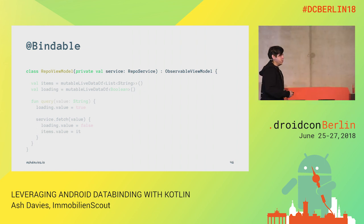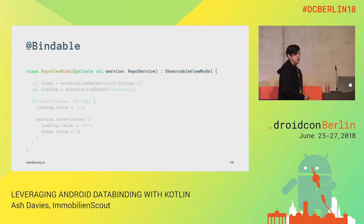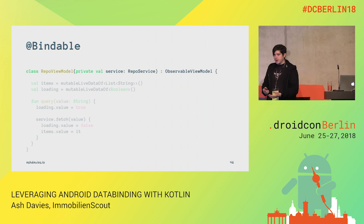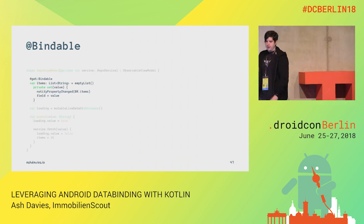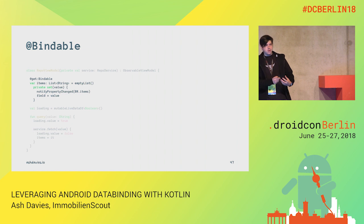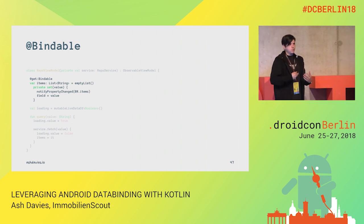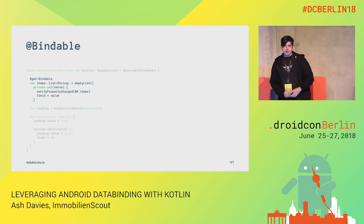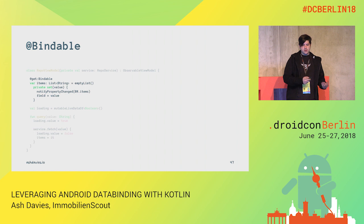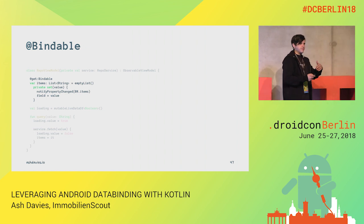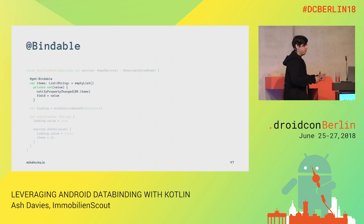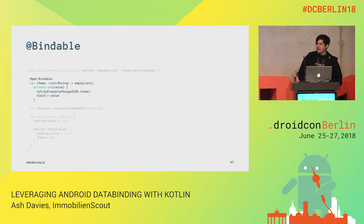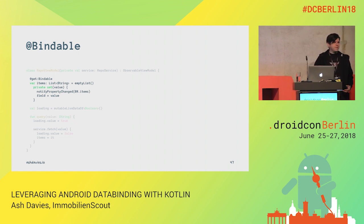In our view model, we now extend from the newly created observable view model and can start creating bindable properties. Instead of using MutableLiveData, we create an actual implementation. We have a var items — variable, which can be changed — and it's much more reflective of its mutable status. We have notifyPropertyChanged to let data binding listeners know that this property has changed upon set. The setter is private, which means we can prevent any access from outside the view model.